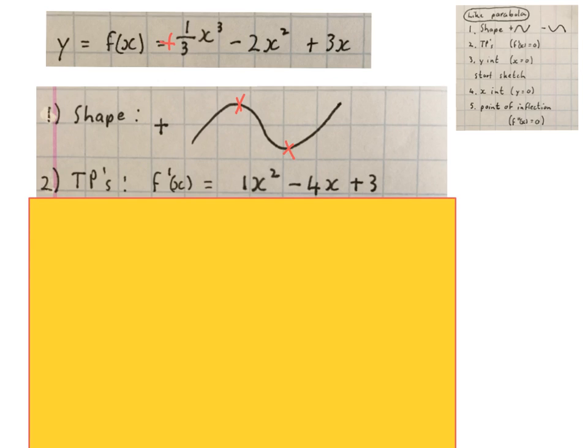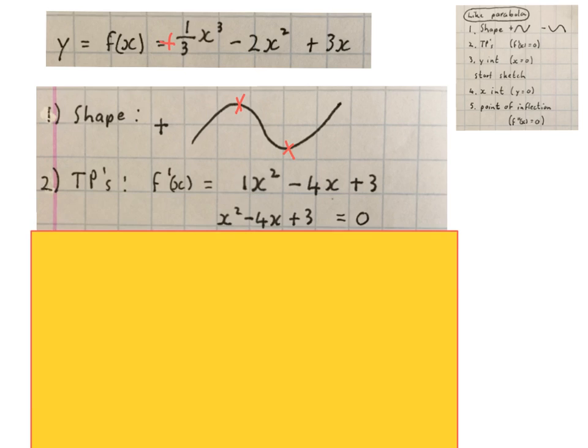The next thing I am going to work out is my turning points or stationary points. I am going to get my first derivative, work it out and equate it to zero. Then we factorize this quadratic equation or use the quadratic formula and solve for x.